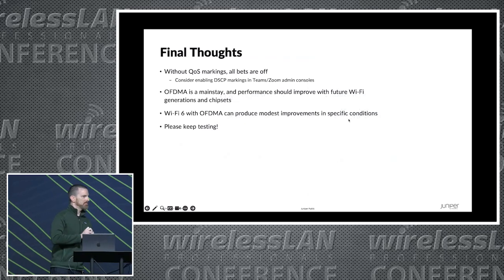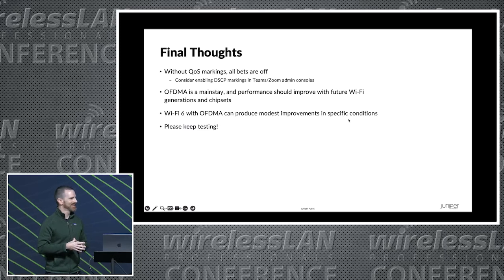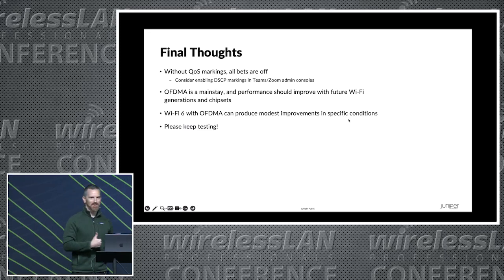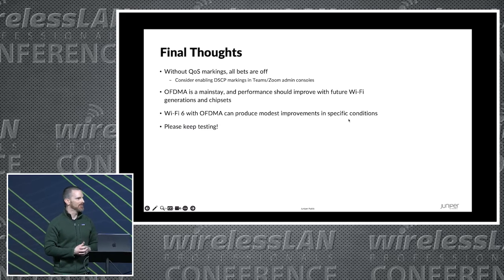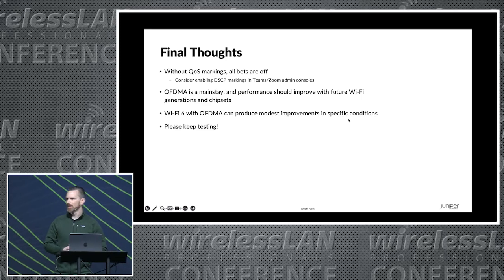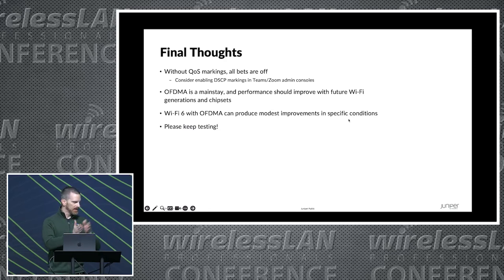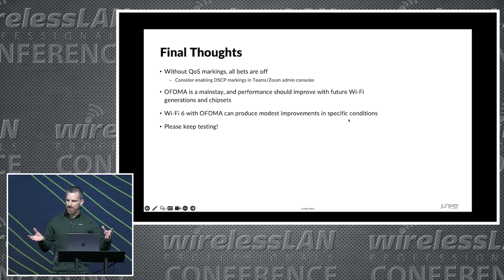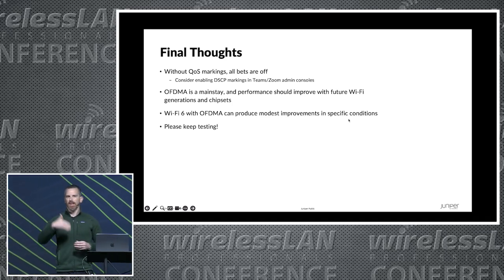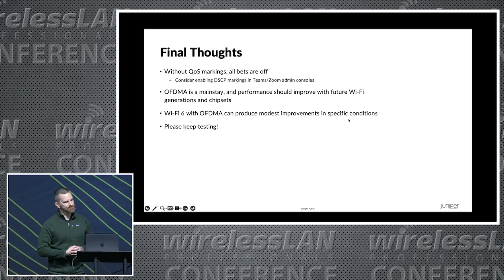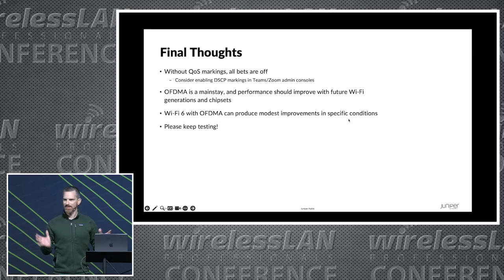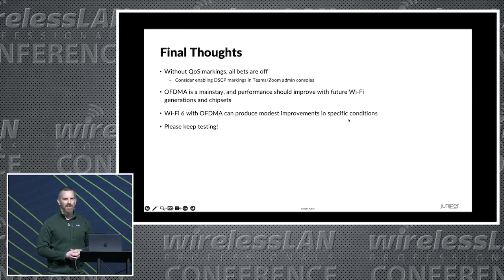To wrap up: I ran this without QoS a few times and it was a mess. OFDMA and Wi-Fi 6 don't replace the need for QoS, particularly on real-time audio and video streams. There are settings in Teams and Zoom to get DSCP onto those packets, which is beneficial. OFDMA is definitely here — with a wide enough channel, enough clients, and the right client mix, you'll see a lot of it. But I think it's a technology that came out, we saw what happened in the real world, and now we're seeing changes in the standard like multi-RU and next-generation chipsets that are going to handle it even better. I encourage anybody thinking about this: do your own tests — let's do it with 50 clients and see what happens.